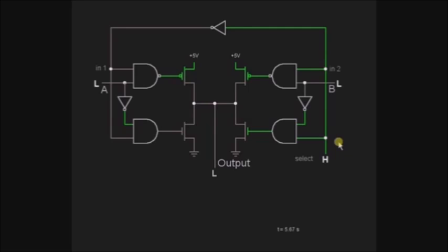We are going to select the input lines using a selection bit. A multiplexer is used where there are a number of inputs and we have to select one from them. The multiplexer is very useful — it is nothing but the selection of something. Where there is a choice, we can go with the multiplexer.